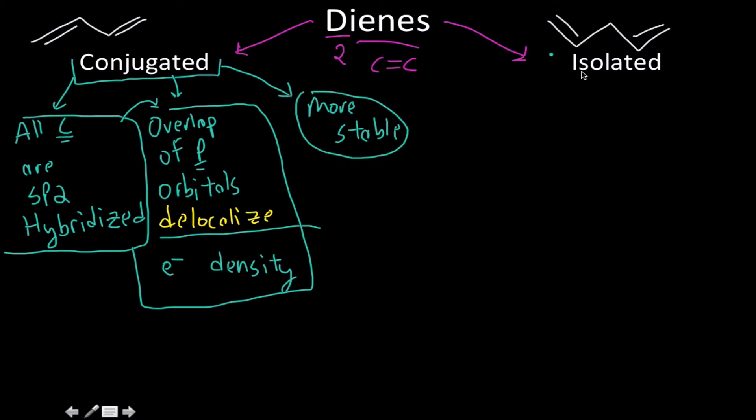If you were to look at this, this is not conjugated because this carbon right here has two hydrogens attached to it. This is sp3 hybridized, whereas every single carbon in this molecule is sp2 hybridized.